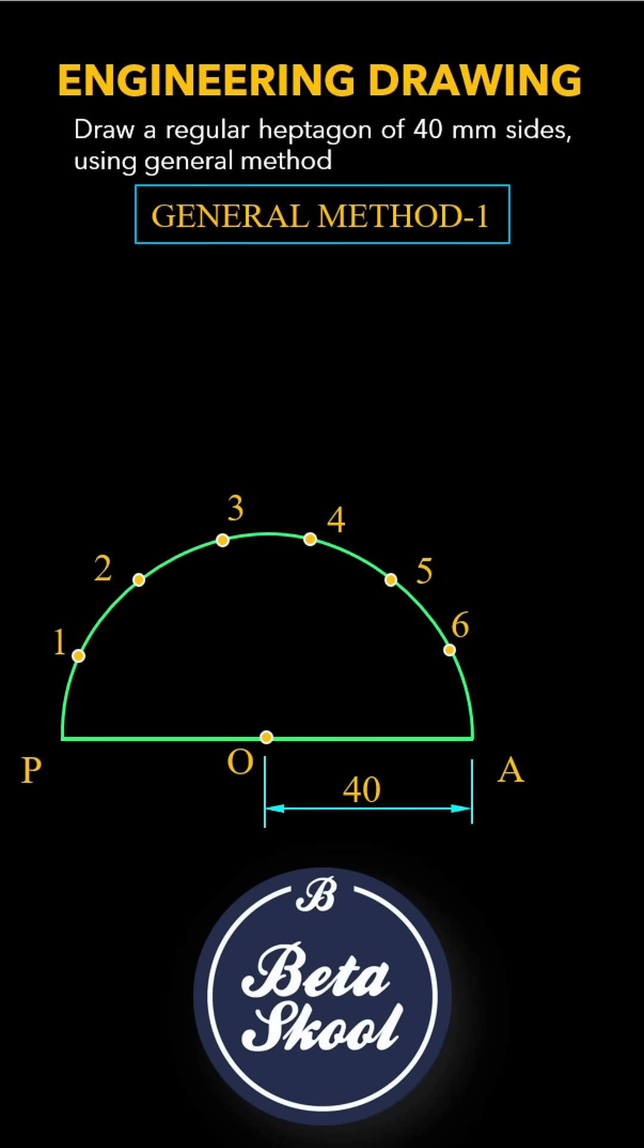Starting from point P, mark these divisions as 1, 2, 3, 4, 5, and 6. Join O1, O2, O3, etc. The section lines passing through points 3, 4, 5, and 6 are to be produced beyond the semicircle as shown in this animation.